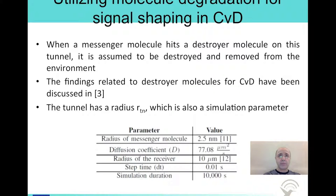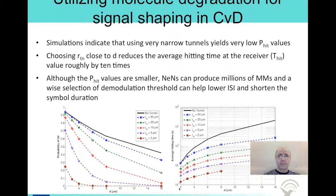You may find the detailed results of this approach in the third paper among the references at the end of this presentation. The basic parameters used to achieve these results are shown in the table here. As expected, if you make the cylindrical channel very narrow, not many molecules will succeed in arriving at the other end of the channel, as observed in the lowest curve in the figure on the left. Also, as the length of the channel increases, the molecules are more likely to touch the surface of the cylinder and get destroyed. Therefore, all curves have a decreasing trend as the distance d between the transmitter and the receiver increases. Since all messenger molecules get destroyed in the case of the narrowest channel when the channel length exceeds 8 micrometers, the average hitting time is not observed for the bottom-most curve in the figure on the right.